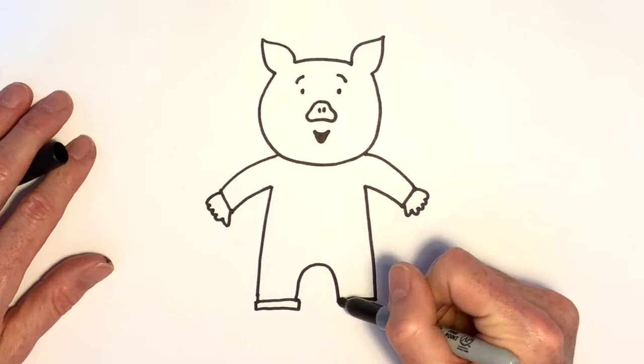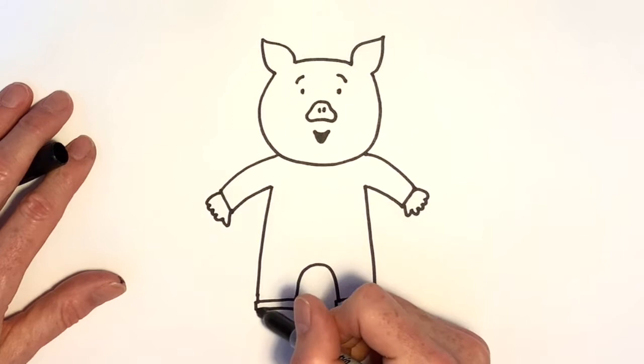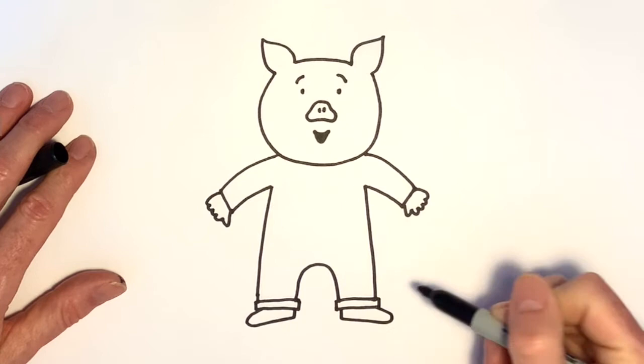And the pig's wearing dungarees, so draw some turnups on the bottom of the dungarees. And let's add some shoes now, one shoe there, one shoe there, and put some heels on the shoes as well.